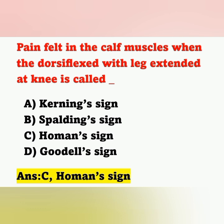Kernig's sign is one of the positive signs of meningitis. Brudzinski sign is one of the positive signs of intrauterine fetal demise or intrauterine fetal death. Option D, Goodell's sign, is a sign of pregnancy — softening of the cervix. Our answer is option C, Homan's sign.